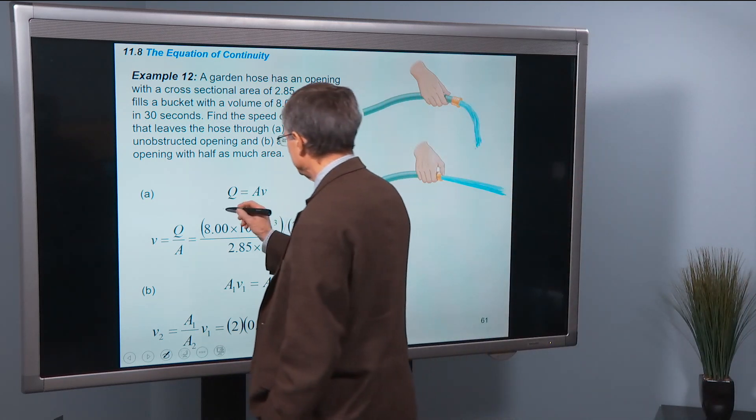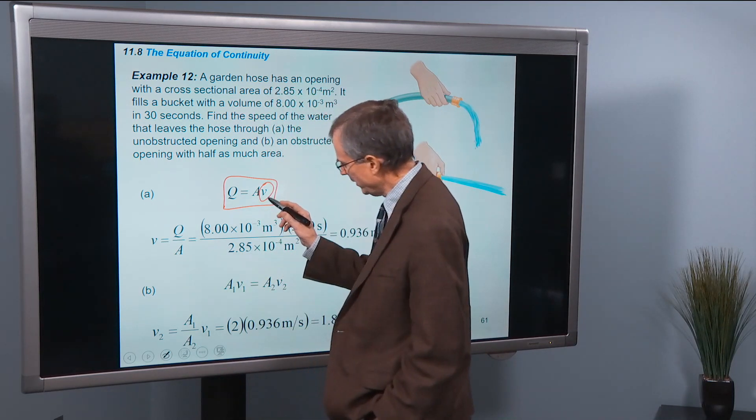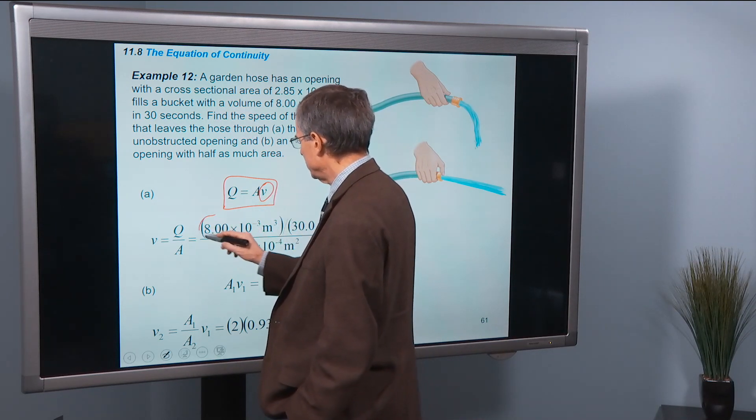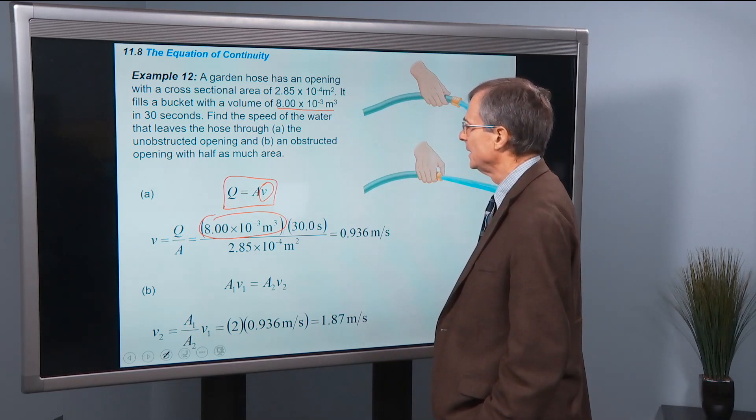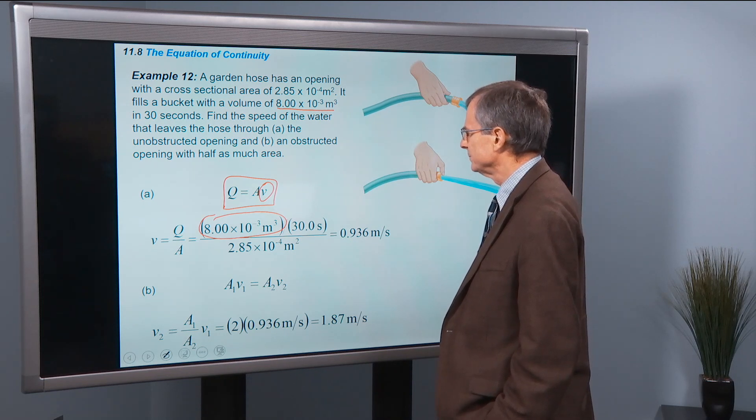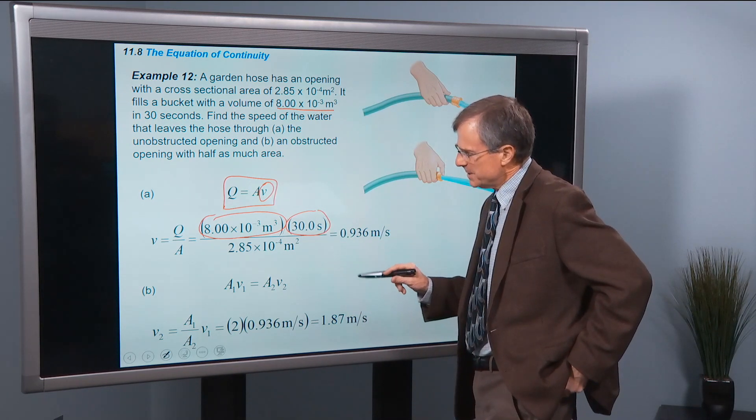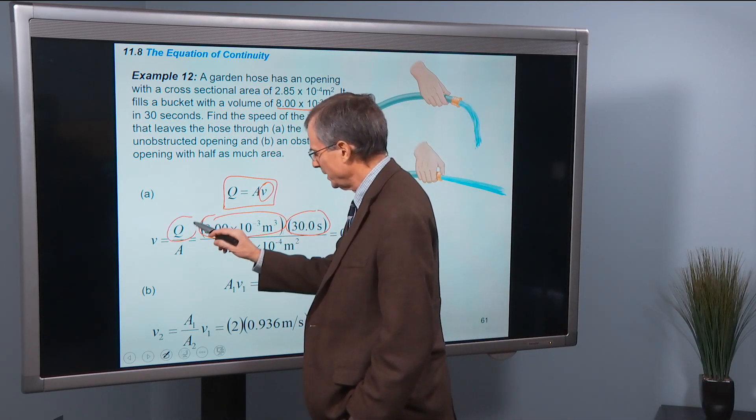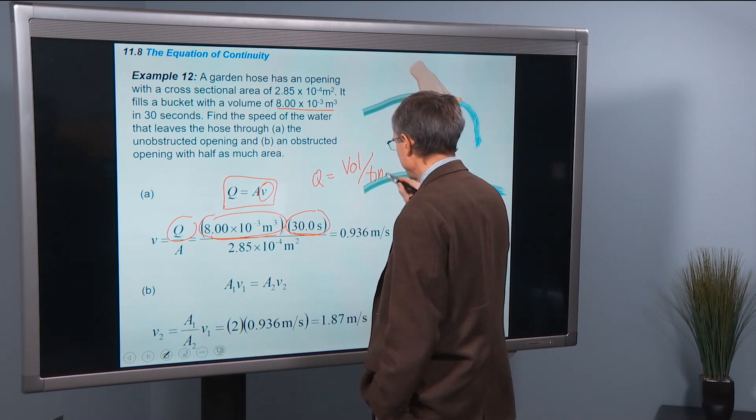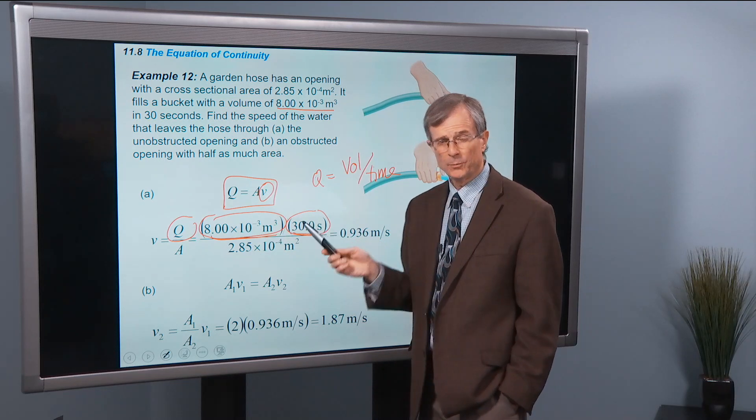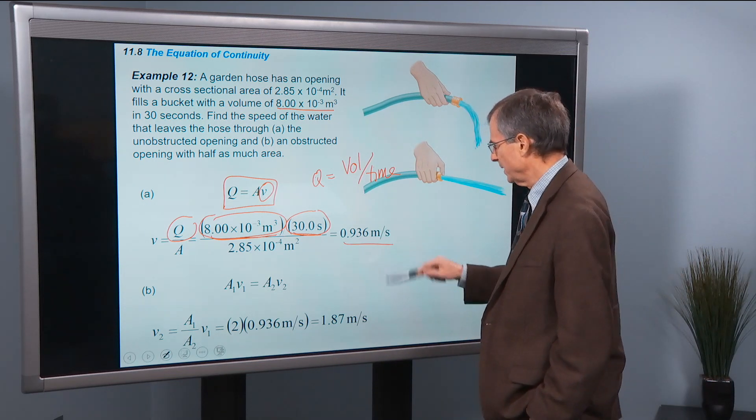So first of all, the volume flow rate is cross-sectional area times velocity. If we want to find the velocity, then we can divide both sides by the area. The volume flow rate is 8 times 10 to the minus 3 divided by 30 seconds. So this is a manifestation of the idea that the volume flow rate Q is a volume divided by a time, like we talked about in the last slide. So there's the volume, and there's the time, and the ratio of those two gives the volume flow rate. Divided by the cross-sectional area, and that gives a velocity of 0.936 meters per second.